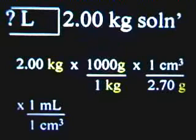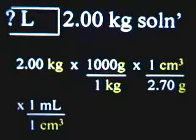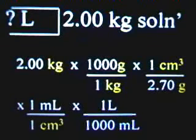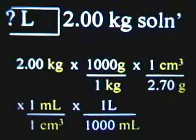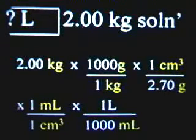The centimeters cubed here is equivalent to a milliliter, which will help us get our final answer in liters. Recognizing that a centimeter cubed is the same thing as a milliliter, the centimeter cubed on top cancels with the centimeter cubed on bottom, giving us an answer in milliliters. Then, to go from milliliters to liters, we use the fact that there are 1,000 milliliters in a liter — milliliters cancel, and we're left with liters. Doing the math: 2 × 1,000 ÷ 1 × 1 ÷ 2.70 × 1 ÷ 1 × 1 ÷ 1 × 1 ÷ 1,000, rounded to three significant figures.